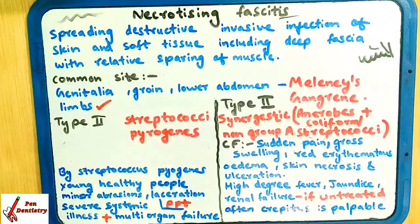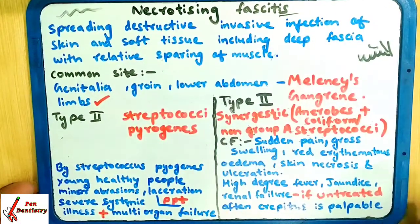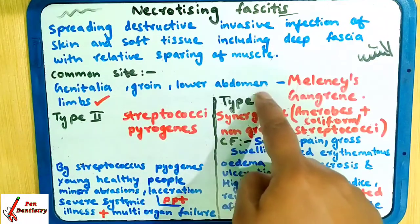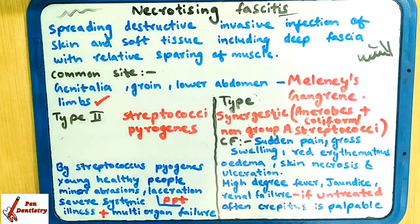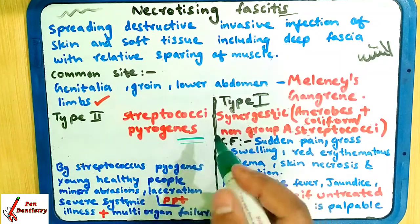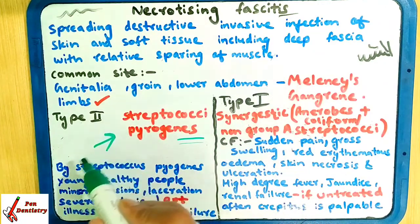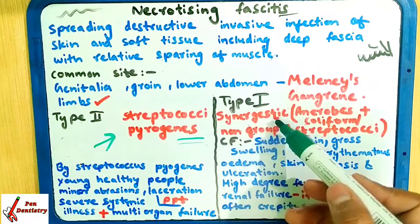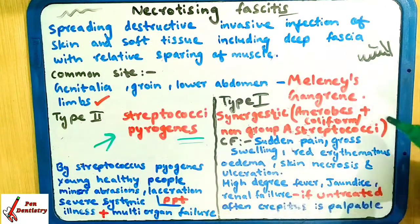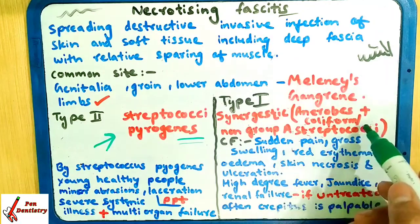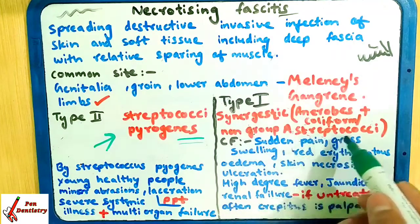Necrotizing Fasciitis is of two types: Type 1 and Type 2. Type 1 is a synergistic combination of anaerobes and coliform bacteria — anaerobes plus coliform or non-group A streptococci.